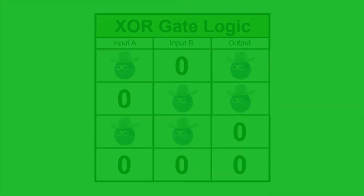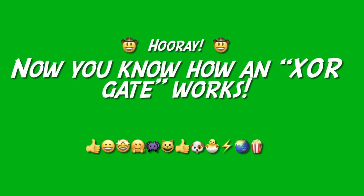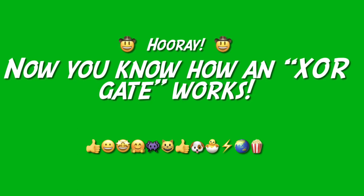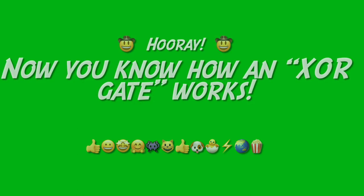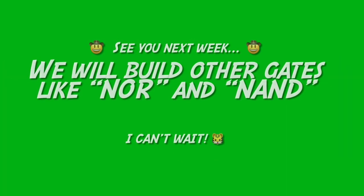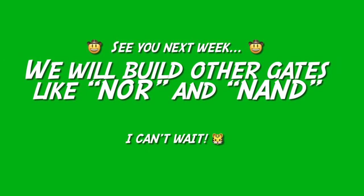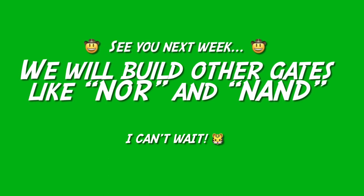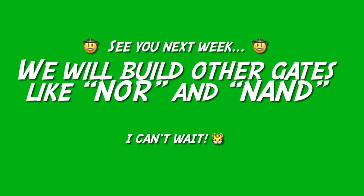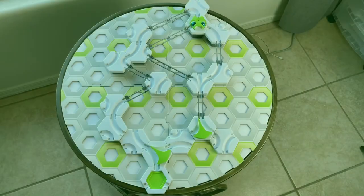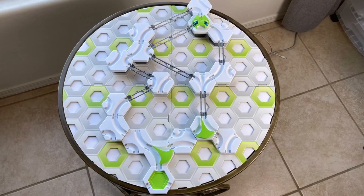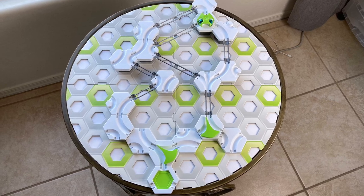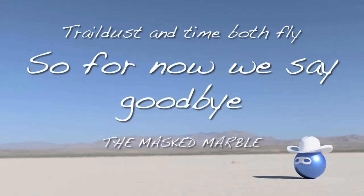So hooray! Today you learned how an XOR gate works, and you built your own logic table for it. We've now built 4 of the 7 basic logic gates. Good job guys! Next week we build the NOR and NAND gates, which combine a NOT gate with the OR and AND gates. So next week's GraviTrax circuit will be bigger, and more complicated, which means it will be even more fun. Okay, see you next week. Thanks a lot guys!